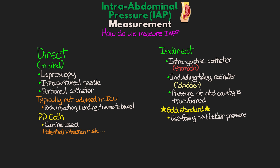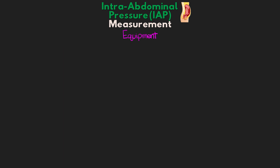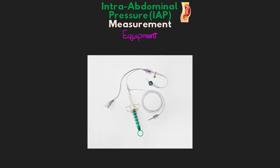Now let's talk about the actual technique. I'm going to review the basic setup for obtaining a bladder pressure. There are different ways this can be done, as well as some special pieces of equipment that really make this setup easier. One example is the AbVisor Autovalve Intra-abdominal Pressure Monitoring Device. There are other devices out there too, but if your facility has these, they are nice because they have almost everything you need as part of one system. That said, I'm going to be covering the basic setup using equipment that's normally found in the ICU.